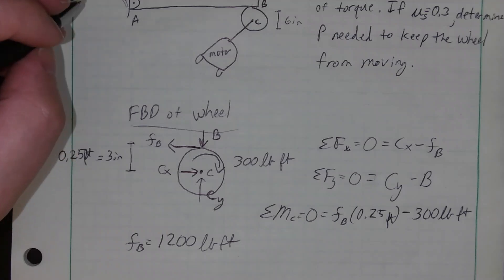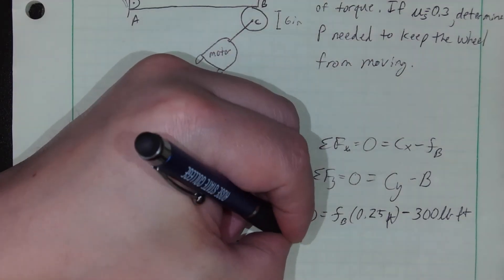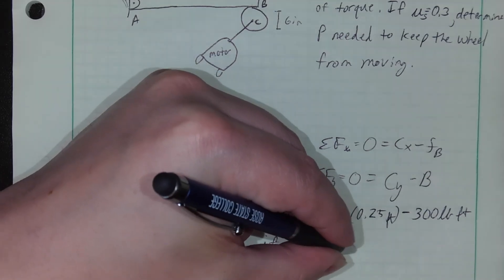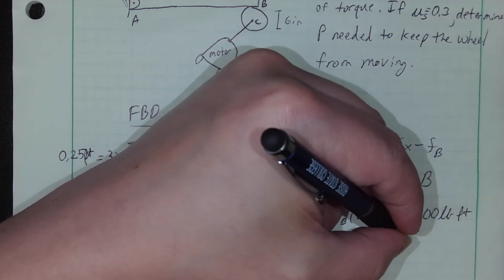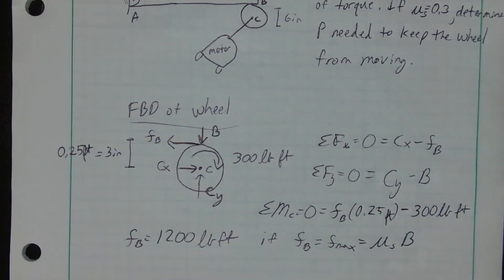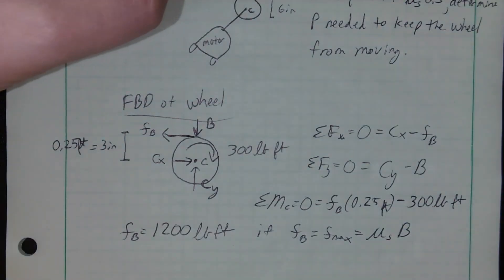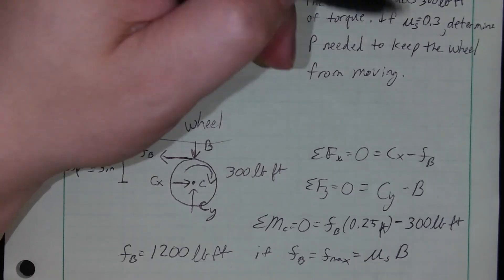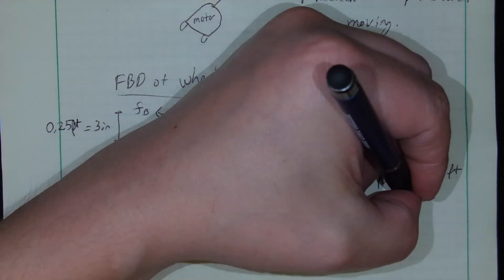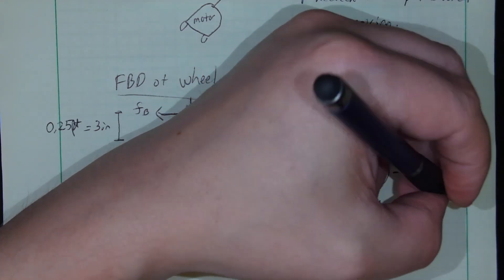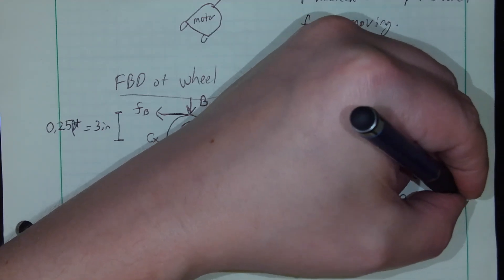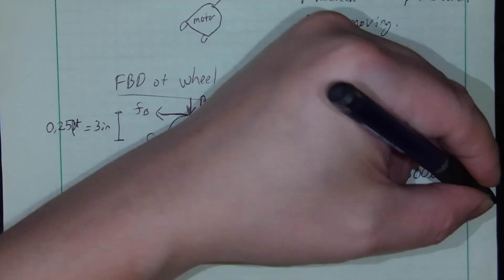And that tells me then that force B... now you can go ahead and solve for CX and CY here. I don't know that we're going to need them. Let's see how we do here. And also we're going to say if that friction B is equal to the max friction, which means it's equal to mu sub S times B. Well that means if mu sub S is up here given at 0.3, so that tells me then that B is going to come out to 4000 pounds. Again using 0.3 and I've got F there, so 4000 pounds so far.